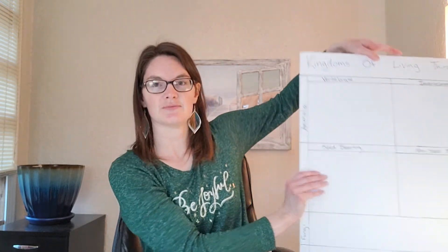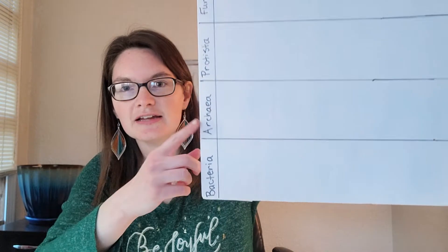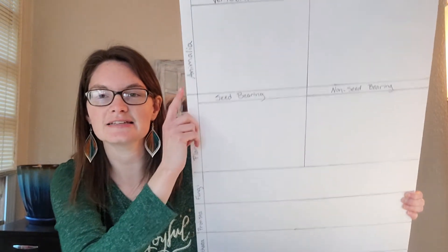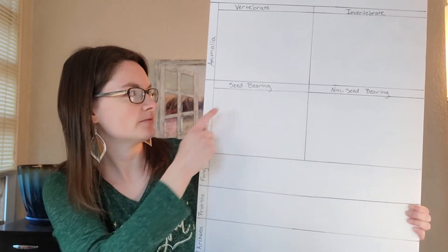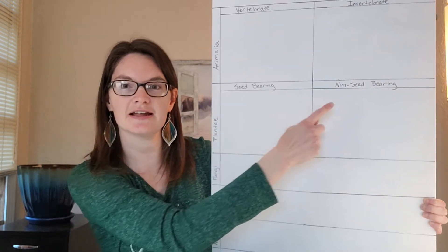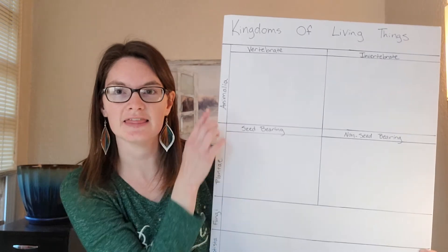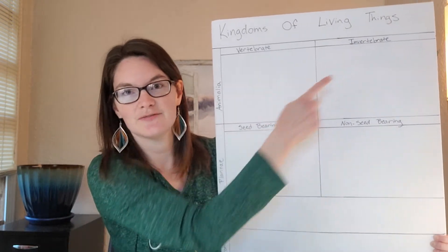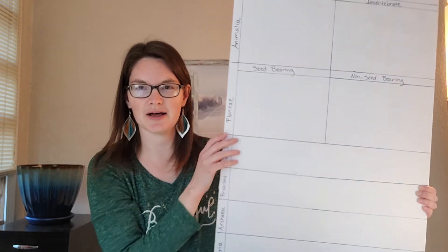Basically, we're building a poster for our kingdoms of living things. In your guide it gives you an example of how to set it up. What we did for our class is we got some foam board and laid out a grid. I listed all the categories of the kingdoms of living things — for plant type we separated it into seed-bearing and non-seed-bearing, and for Animalia we did vertebrates and invertebrates.